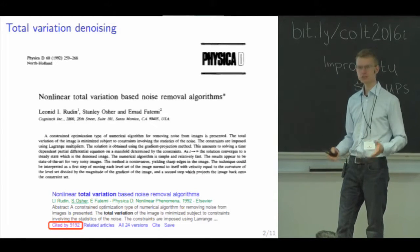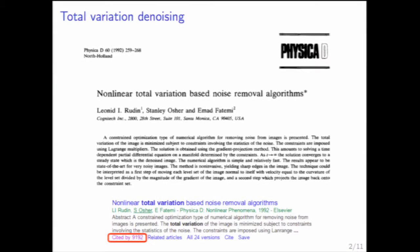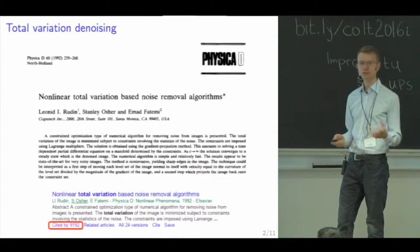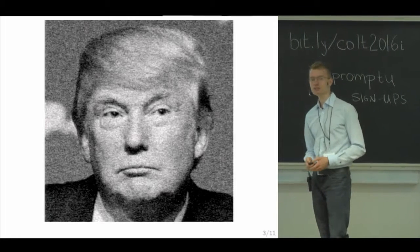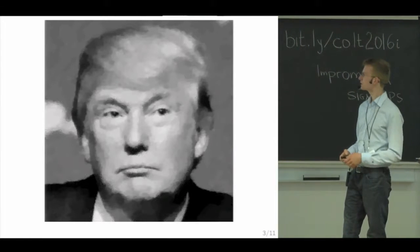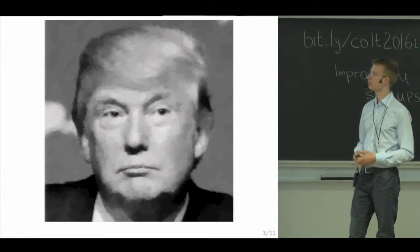Total variation denoising is an image denoising algorithm. It was developed in the early 90s by Rudin, Osher, and Fatemi, and the paper has since been insanely popular, as can be seen by more than 9,000 citations on Google Scholar. You pick your favorite image, apply some noise, and run total variation denoising on it, and you get back a denoised picture.